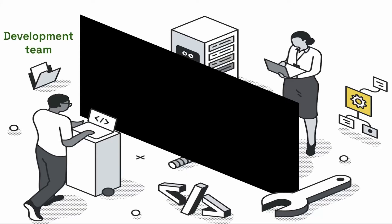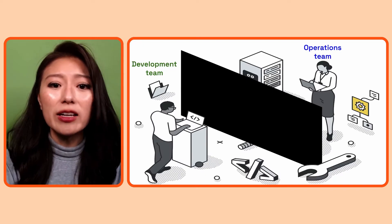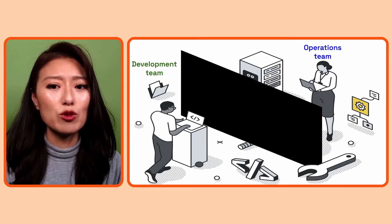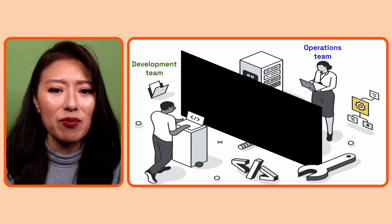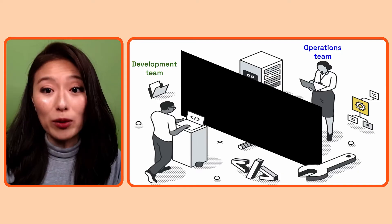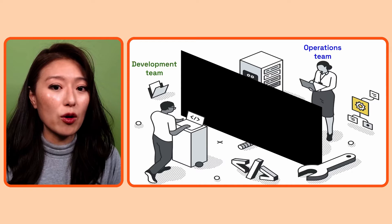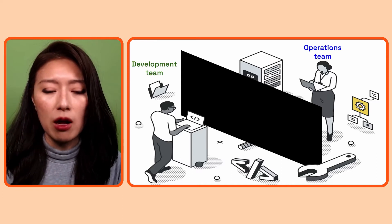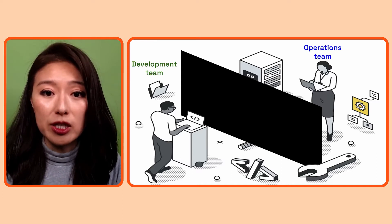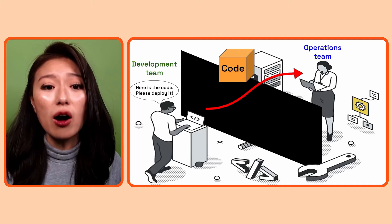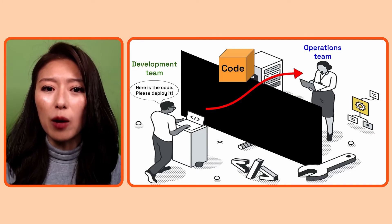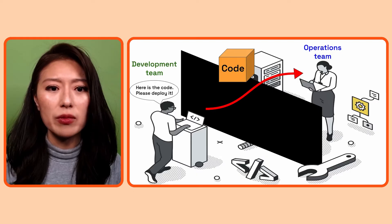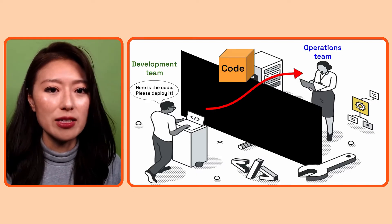There are many teams that work together to deliver software to the users. Let's take the development team and the operations team, for example. In the traditional setup, these teams worked in silos with different expertise and conflicting incentives. It was almost like there was a wall between them, so they were not aware of what each team was doing. The development team wrote the code and tossed that code over the wall so the operations team could deploy and operate the app.